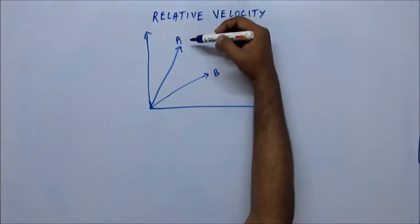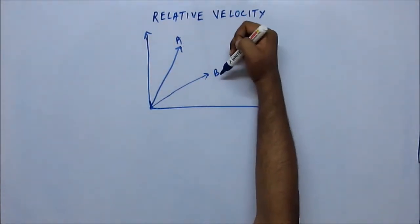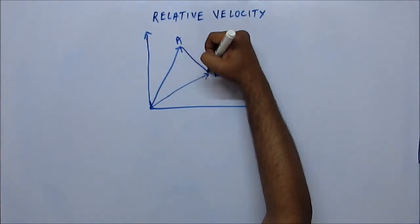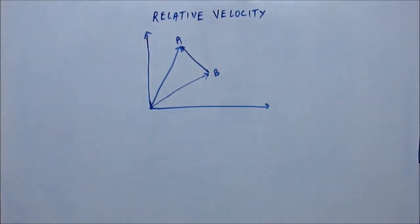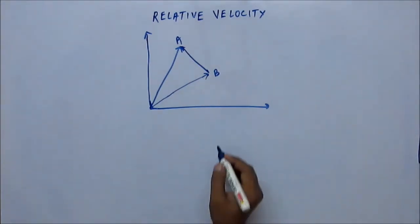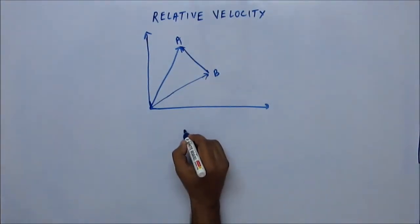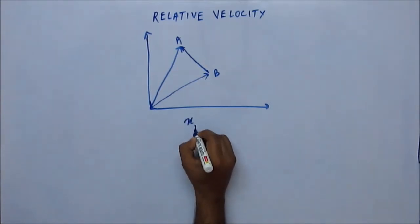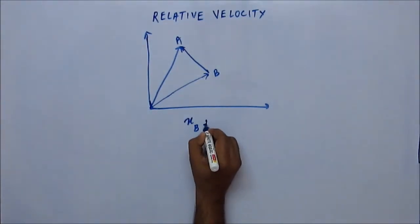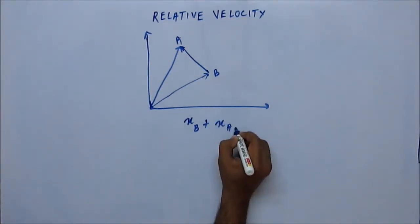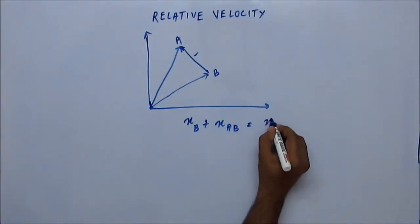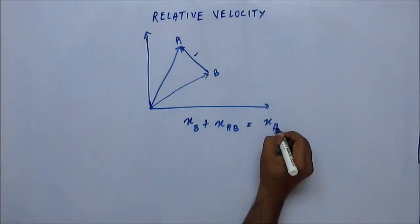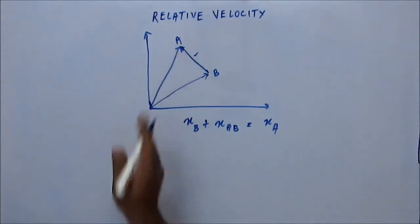So if you are talking about displacement of A with respect to B, it will be this vector. Now because we have studied vector algebra already, it shouldn't be a problem for us to say that the position vector of B plus the position vector of A with respect to B equals the position vector of A, from the triangular law of vector addition.